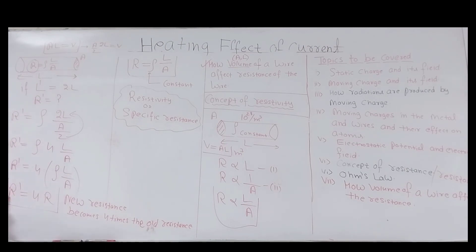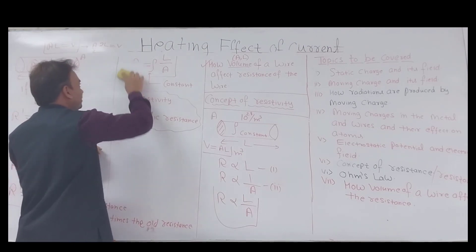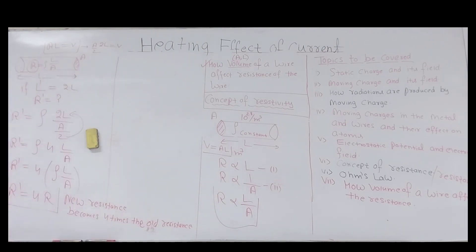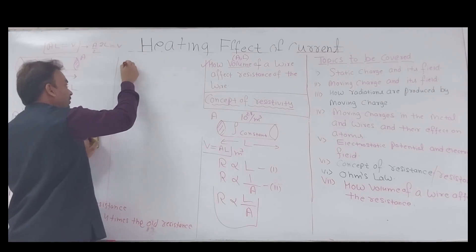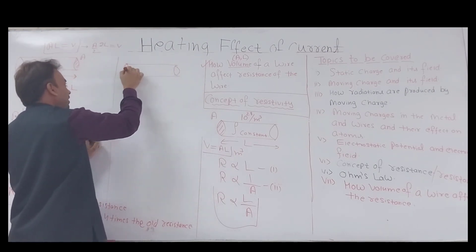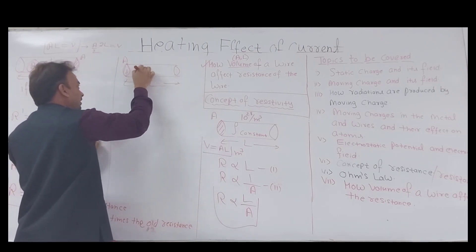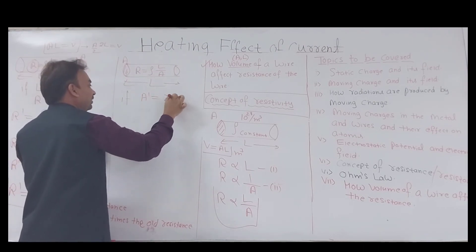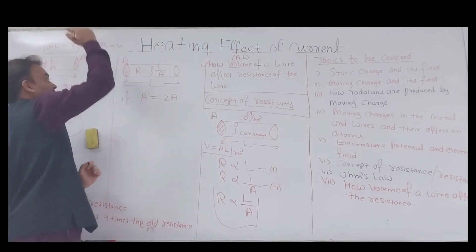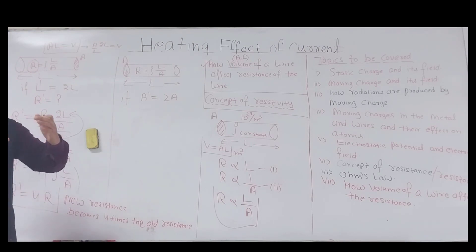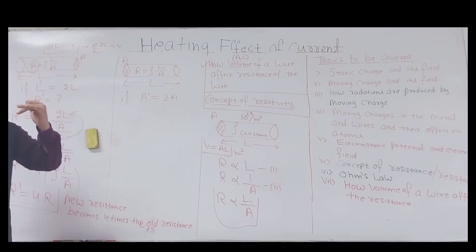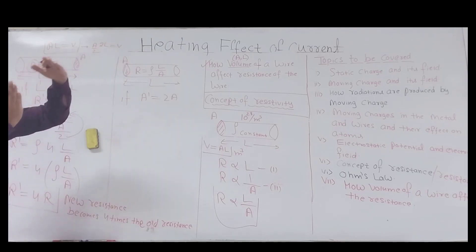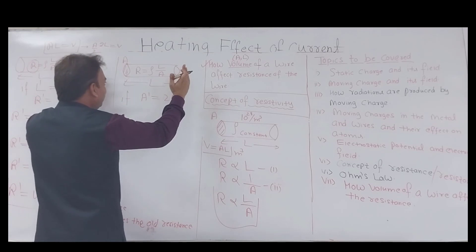Now consider a second case: for the same wire of length L and area A, we double the cross-sectional area. We beat the wire so that the area becomes 2A. Since volume must remain constant — V = A × L — if the area doubles, the length must halve to L/2.